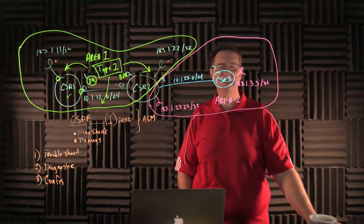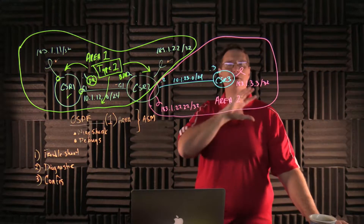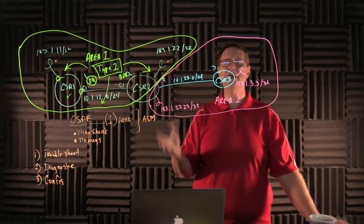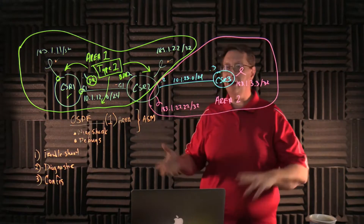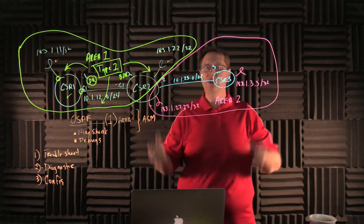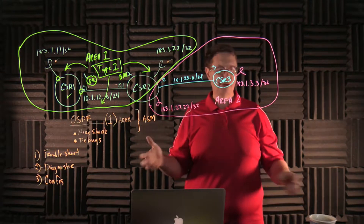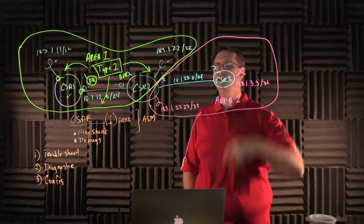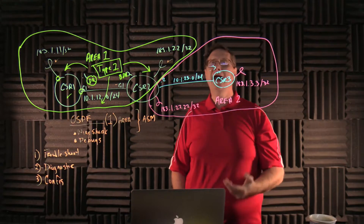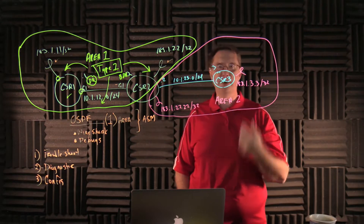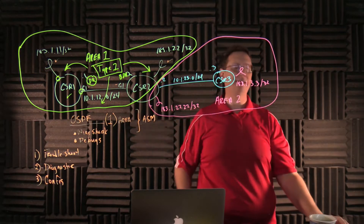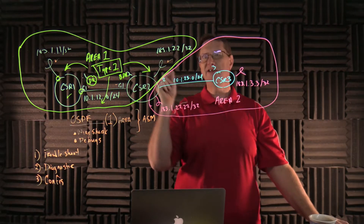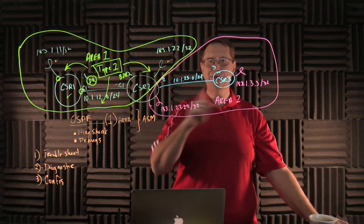I'll do a second part to this and go ahead and wrap up now. If you have any questions, lab it — build this. It's three routers; there's no reason you can't do this in EVE-NG, GNS3, or with real devices. Nothing is stopping this lab as far as interconnection. Play around with this idea: build the area, look at the Type 1s, restrict generation of Type 2s. Once you understand what's happening, join me in the next video where we'll build the right side of the equation and see what's not happening based on what we've done.